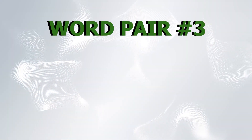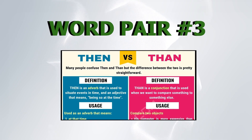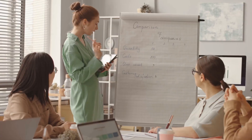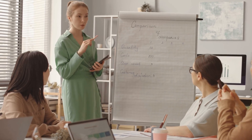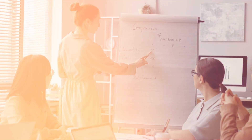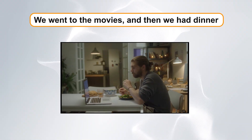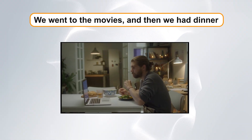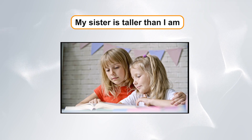Word pair number three: then and than. Our third pair is then and than. Then is used to indicate time or sequence, while than is used for comparisons. Example sentences: One, we went to the movies and then we had dinner. Two, my sister is taller than I am.